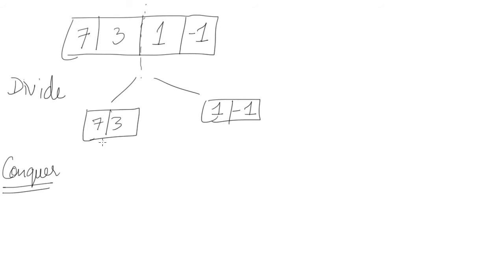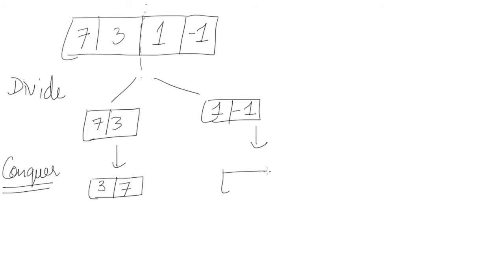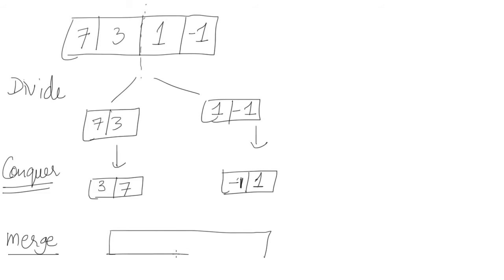The second part in merge sort is the conquer part. You take the left list and try to sort it using the merge sort function again. Assuming recursion works, you get 3, 7 for the left half. The right half 1, -1 is sorted to get -1, 1. The last part is the merge part, which given two sorted lists merges them to produce the final sorted list.